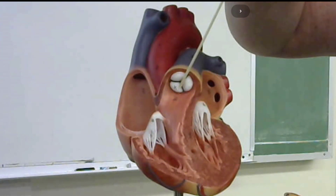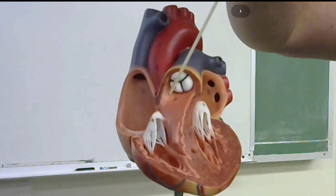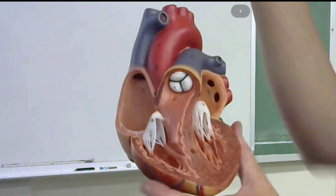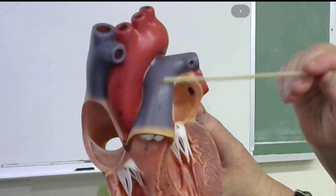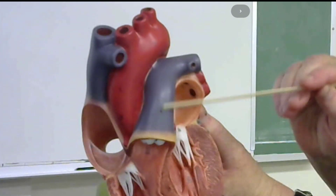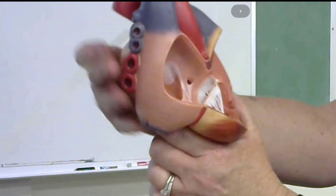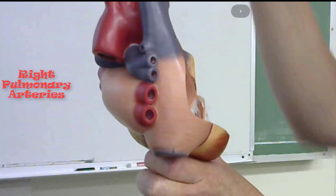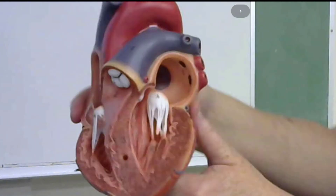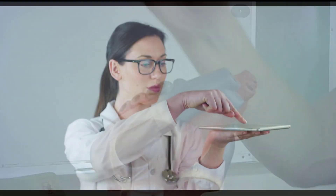Once the deoxygenated blood reaches the right ventricle, the right ventricle will contract and push the blood up through the pulmonary semilunar valve. Next, the blood travels to the pulmonary trunk — and remember, this is an artery. The pulmonary trunk will bifurcate into the right pulmonary arteries and the left pulmonary arteries.